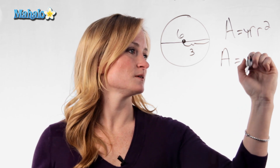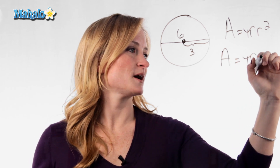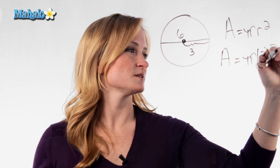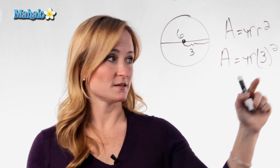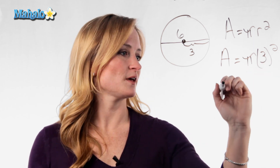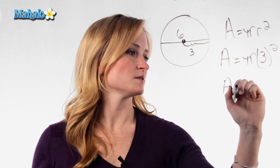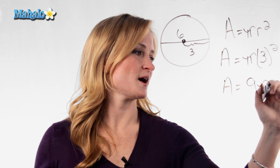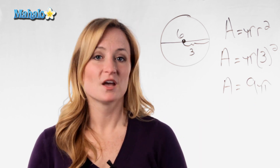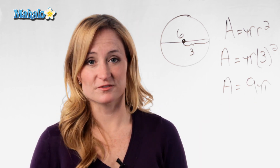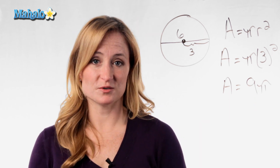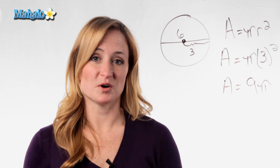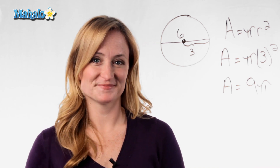So A equals pi times 3 squared. You need to make sure you square that 3, so A equals 9 pi. You're going to want to find out if your instructor wants you to use pi in your answer, or if they want you to multiply it out.